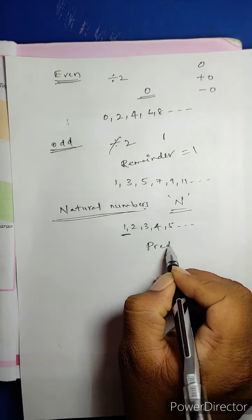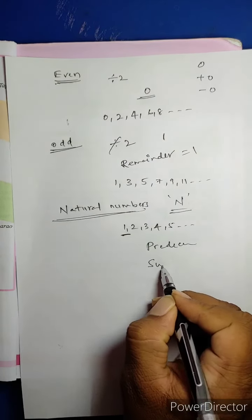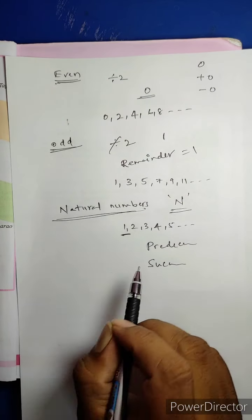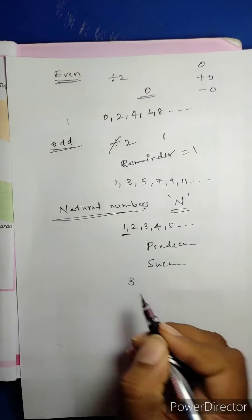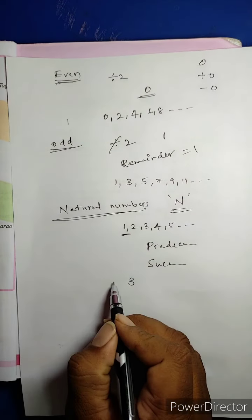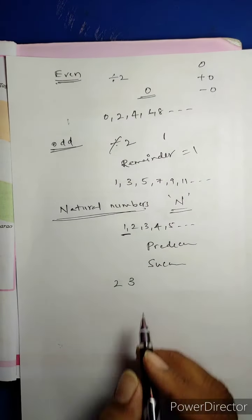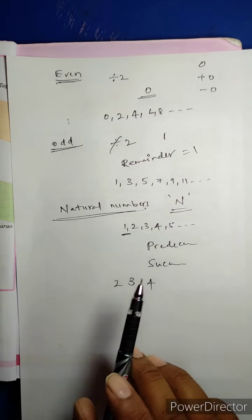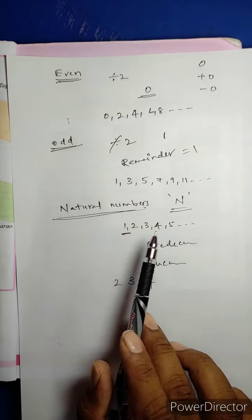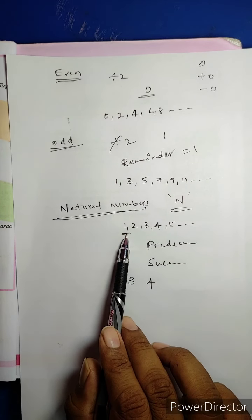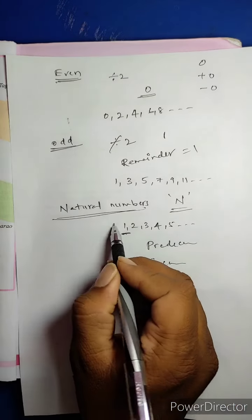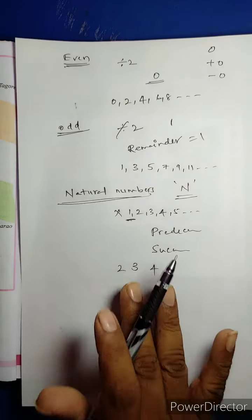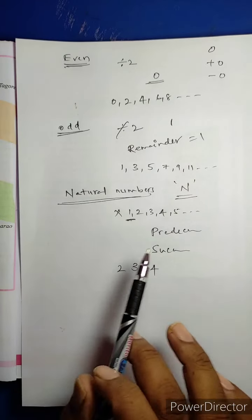Next, what is meant by predecessor and what is meant by successor? Predecessor means the number before. Successor means the number after. What is the predecessor of 3? 2 is the predecessor of 3. 4 is the successor of 3. In Natural Numbers, there is no predecessor for 1.